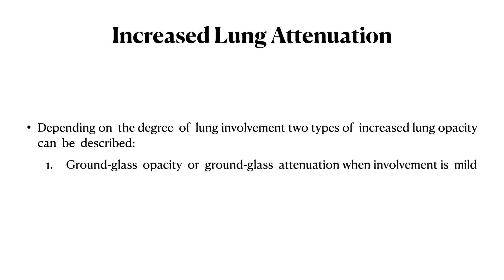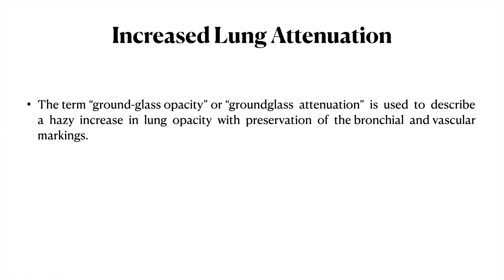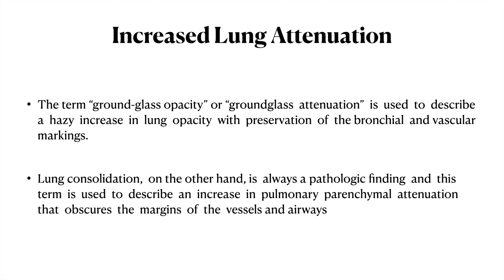Increased lung attenuation presents as ground glass opacity with mild involvement, which can be physiological, seen in dependent areas and on expiratory films. With more advanced involvement, it presents as consolidation. Ground glass opacity describes a hazy increase in lung opacity with preservation of bronchial and vascular markings. Consolidation is always pathological and describes an increase in pulmonary parenchymal attenuation that obscures the margins of vessels and airways.